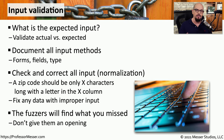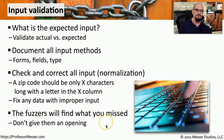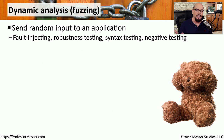It's important that the application developer understand exactly what input is being used and how it's handled. Attackers are going to use third-party tools such as fuzzers to constantly try to randomize input into the application to see if they can make the application perform unexpectedly. This term, fuzzing, refers to a task called dynamic analysis, where random data is simply put into the input of an application.